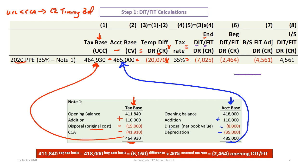We can illustrate this ending balance of $7,025 using a T-account. To figure out the required adjustment, we need the beginning balance. The beginning UCC was $411,840 and beginning accounting basis was $418,000 — the difference is a credit balance of $6,160. At the previous year's rate of 40%, this gives an opening deferred income tax balance of $2,464 credit.